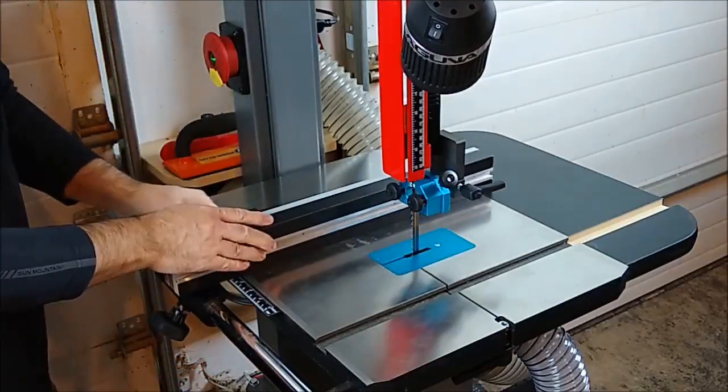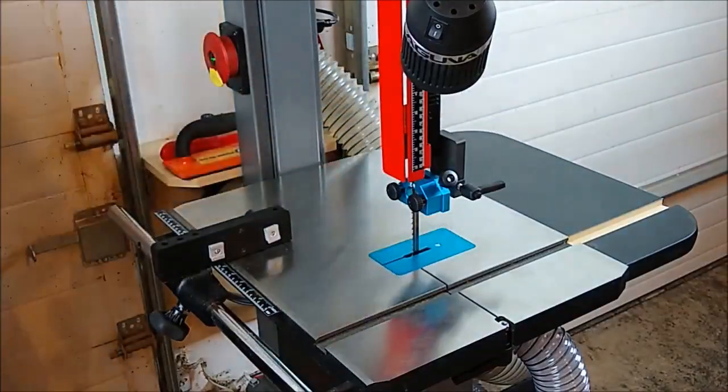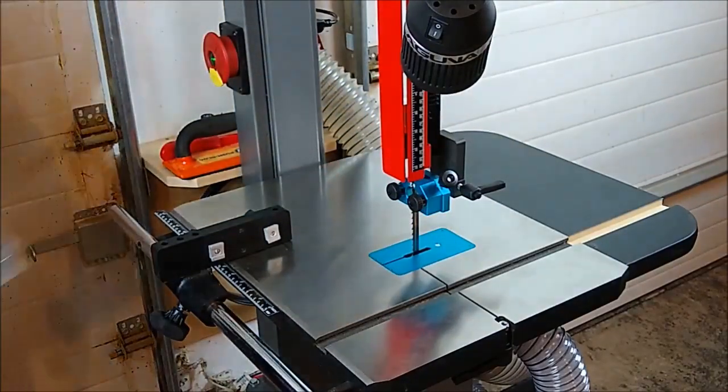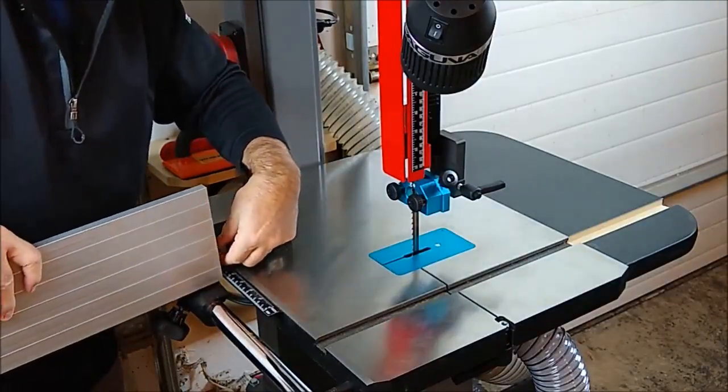If you wanted to switch that out for the tall resaw fence, you can actually use the same hardware. You just have to orient the little miter nuts sideways.